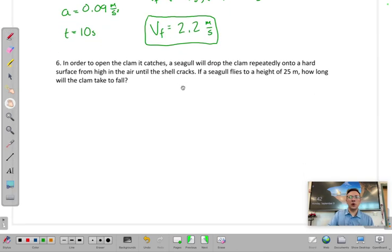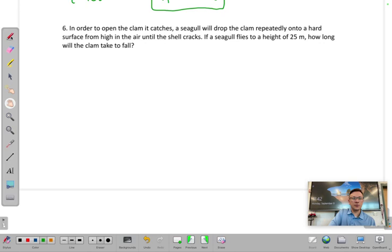In this problem, it says, in order to open the clam it catches, a seagull will drop the clam repeatedly onto a hard surface from high in the air until the shell cracks.